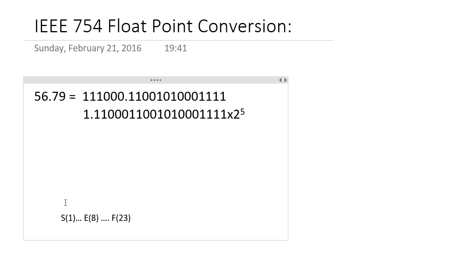Here we have a positive number, so our first digit — the sign bit — is 0, because 0 represents a positive number in the IEEE 754 binary standard.